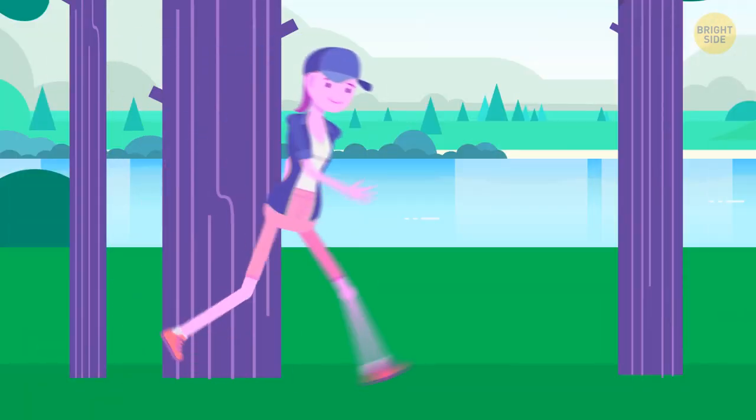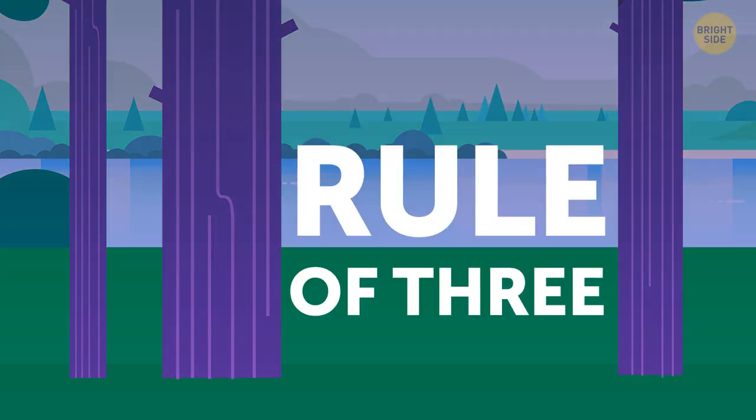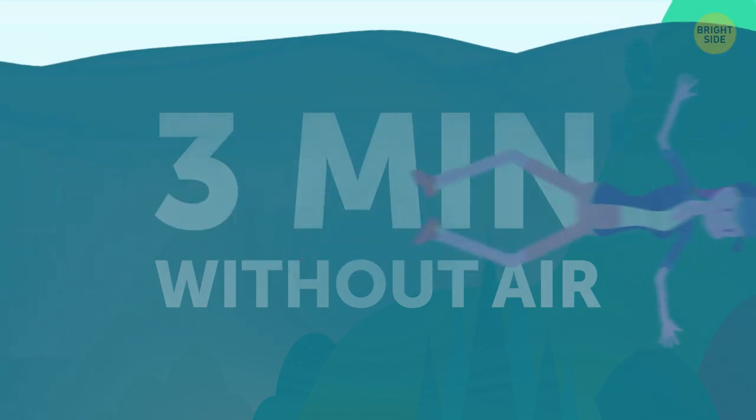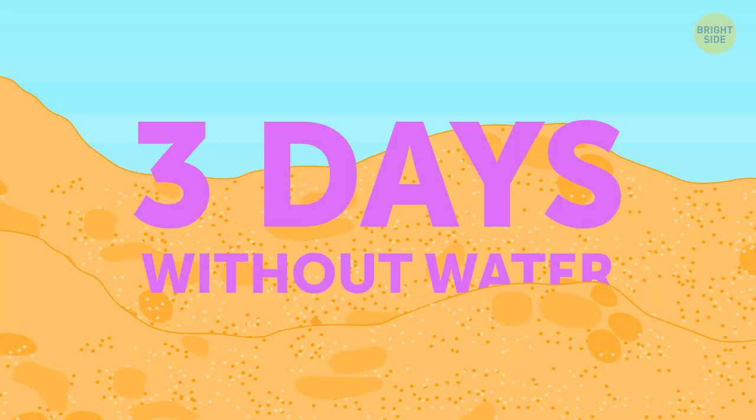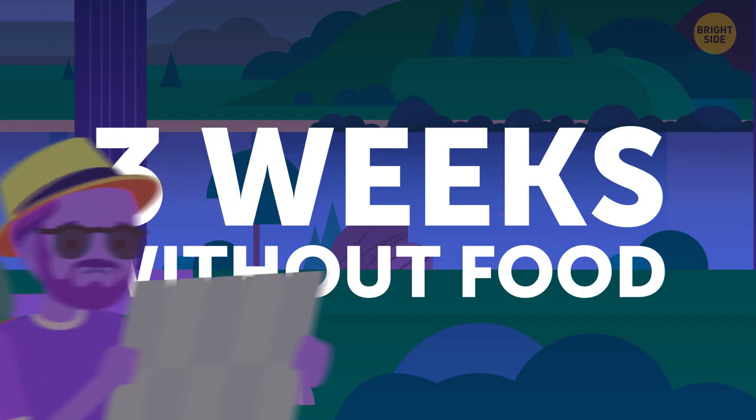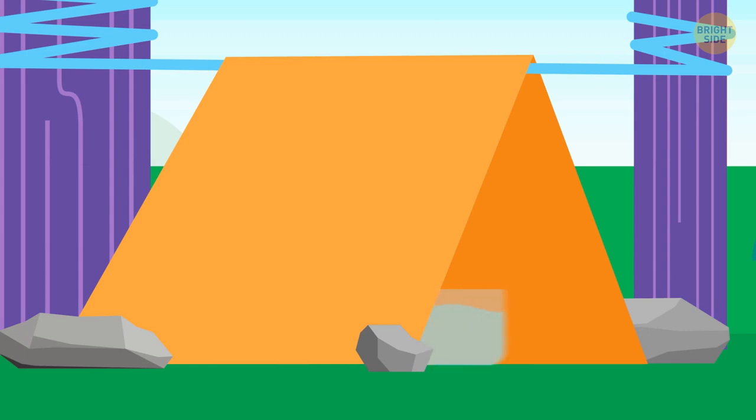If you get lost, remember the rule of three to stay calm and do the right things in the right order. You can survive three minutes without air, three hours in extreme temperature, three days without water, and three weeks without food. So start with building shelter, then get water, and only then take care of food.